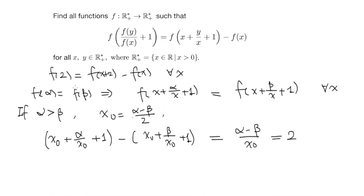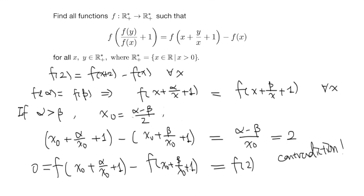So now we can apply the equation on x equals to this term in the first equation. So in particular, we have that f((x0 plus alpha) over (x0 plus 1)) minus f((x0 plus beta) over (x0 plus 1)) must be equals to f(2). However, we know that they are equals to each other and this is 0. So this is a contradiction because f is defined on positive real numbers. So this is not possible. Contradiction. And this shows that alpha must be equals to beta. In other words, f is injective.